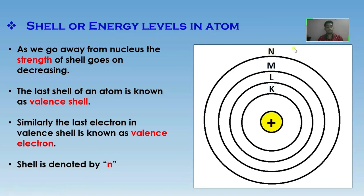As we go away from nucleus, the strength of shell goes on decreasing. The last shell of an atom is known as valence shell. Similarly, the last electron in valence shell is known as valence electron. Shell is denoted by small letter n.